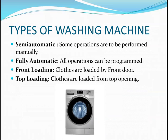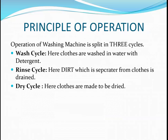There are types of washing machines: semi-automatic, fully automatic, top loading, and front loading. Semi-automatic requires some operations to be performed manually. Fully automatic machines are fully programmed with wash to dry cycles. Front loading machines are mostly used in laundries, while top loading machines are preferred in homes. The principle of operation involves three cycles: wash cycle, rinse cycle, and dry cycle, where clothes are washed with detergent, dirt is separated, and clothes are dried.